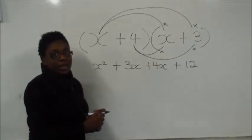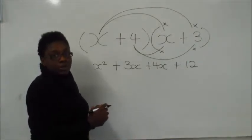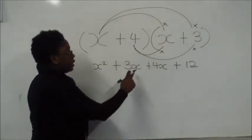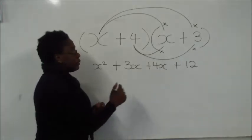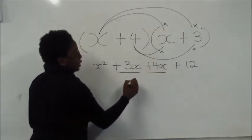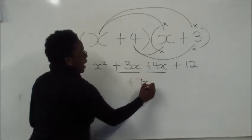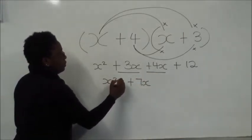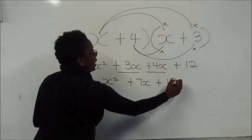Now we need to collect the like terms. The two in the middle are the only ones that are like terms because they both have x's at the end. So positive 3x and positive 4x gives us positive 7x. X squared stays the same, plus 12 at the end.